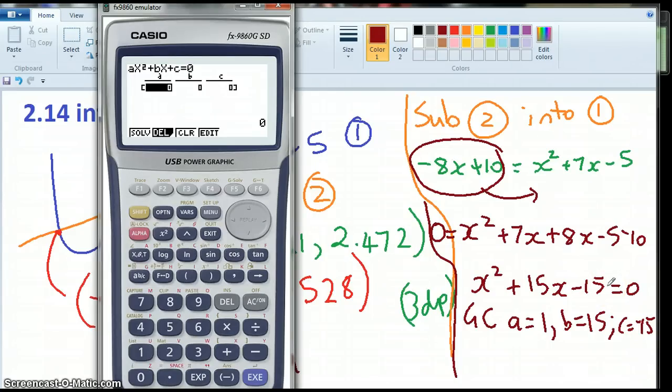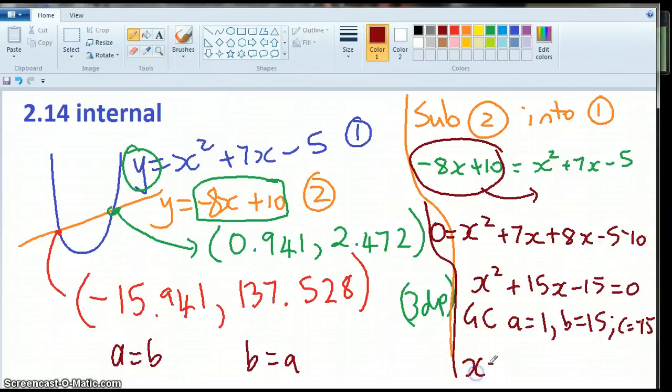So my a is 1. My b is 15. My c is negative 15. And I have got x equals, and let's have a look.